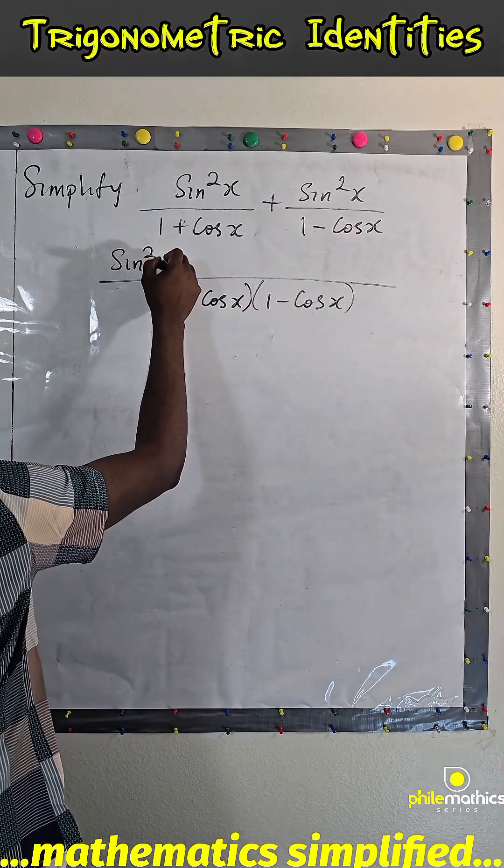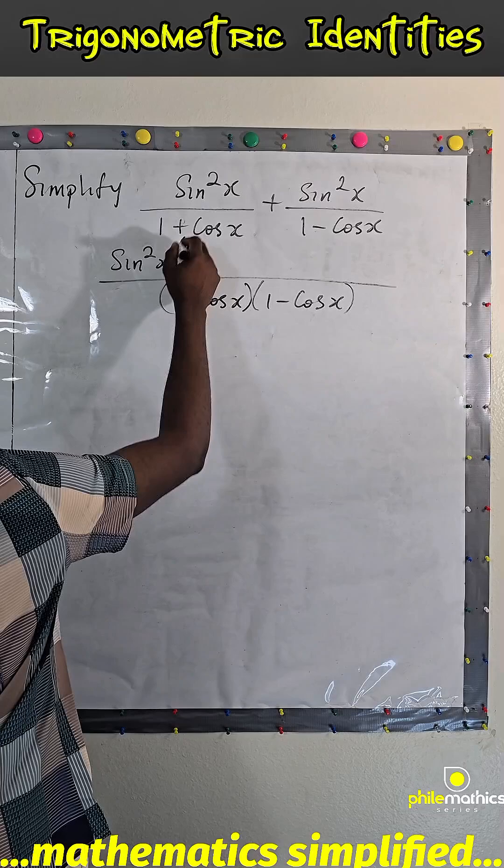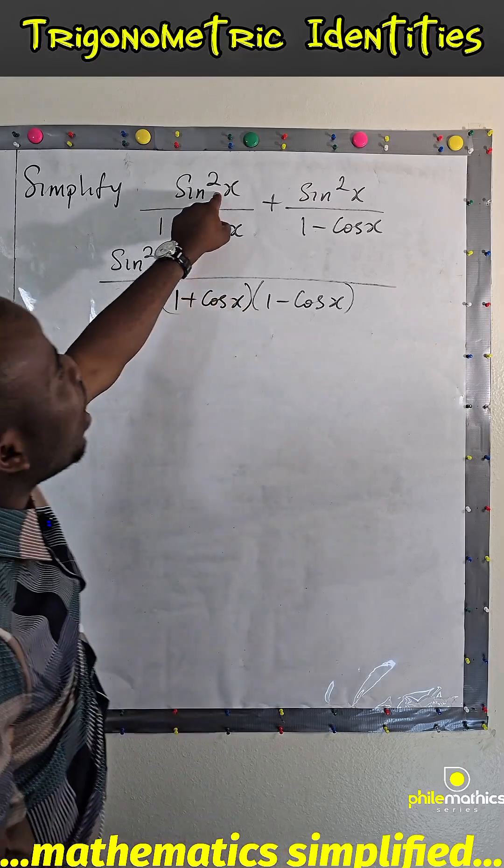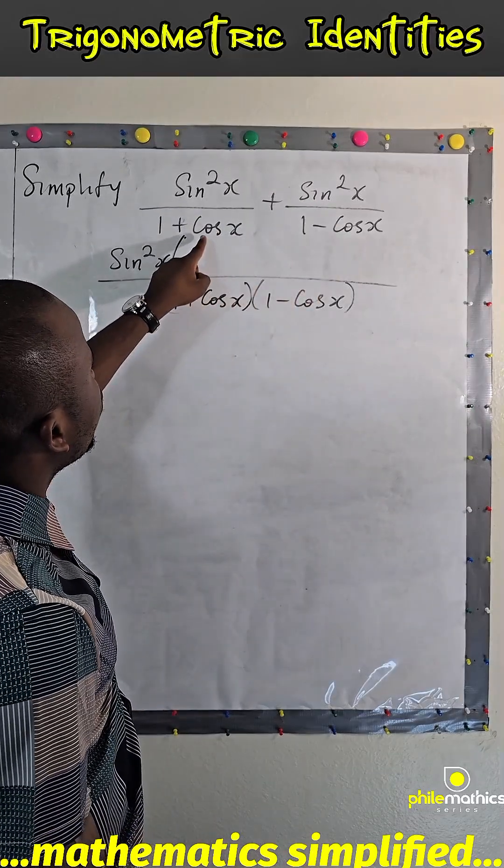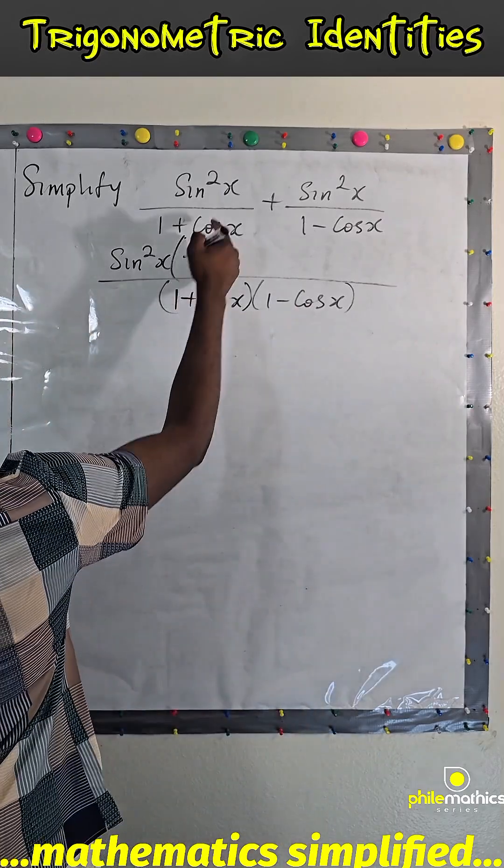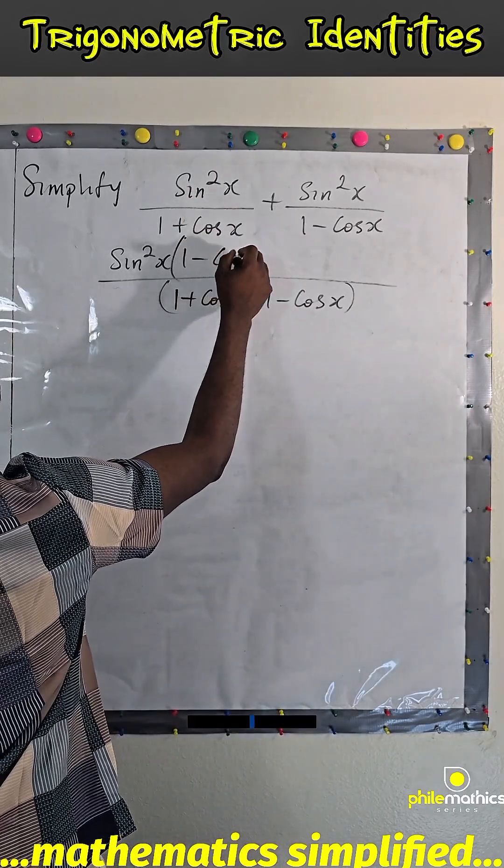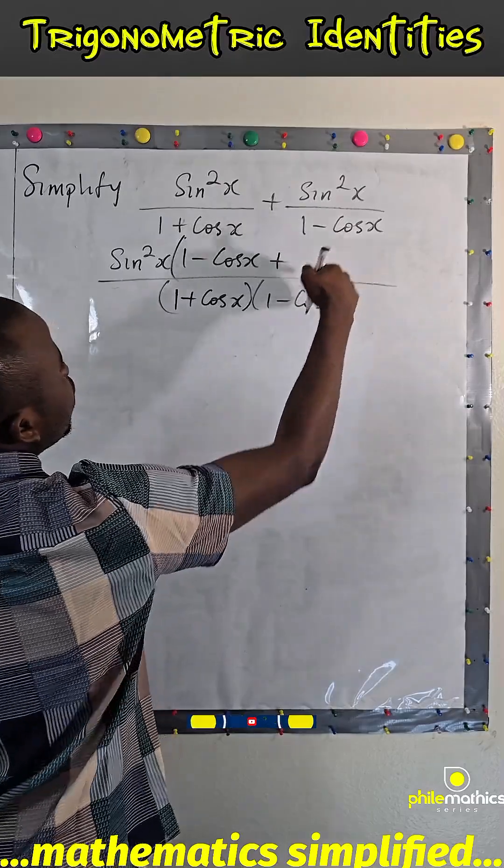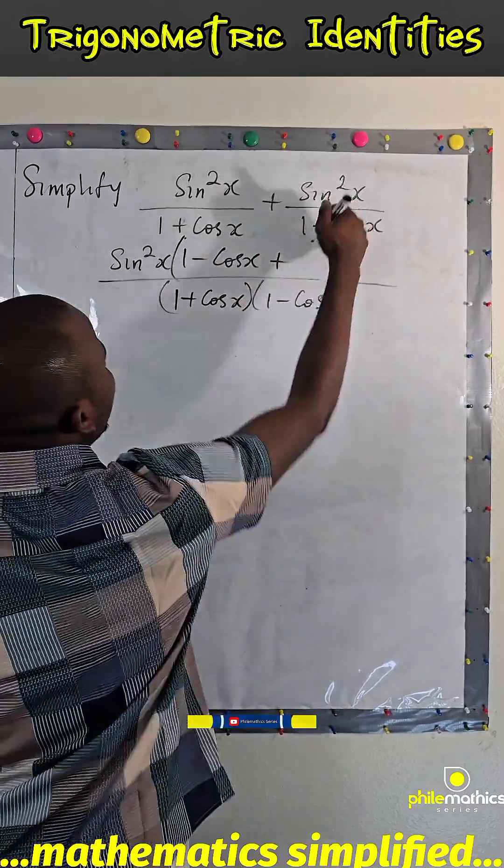We have sine square x so that we have 1 and 1 here. So this into this, we have 1 minus cos x times 1 minus cos x, plus this into this, we have 1 plus cos x times 1 plus cos x.